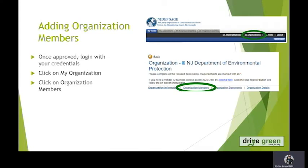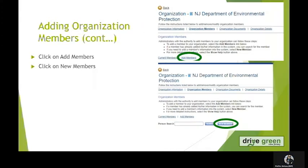To do that, once you've been approved, you will log in with your credentials. Then on your home page you will click on My Organization and then click on Organization Members. You will be brought to a page where you will click Add Members and then you will have an option to search for members or add a new member.